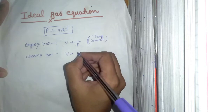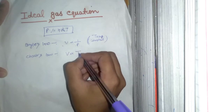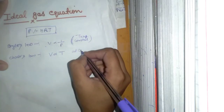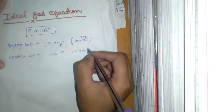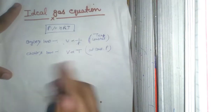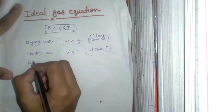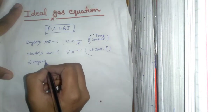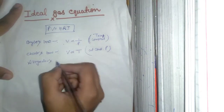If we talk about Charles's law, volume is directly proportional to the temperature at constant pressure. And if we talk about Avogadro's law...